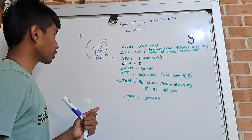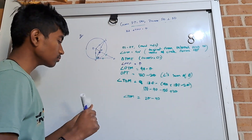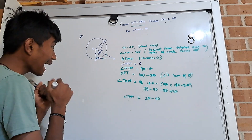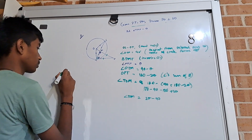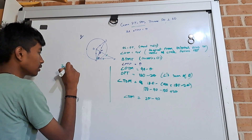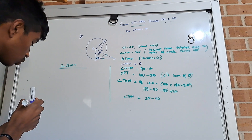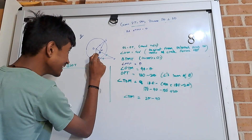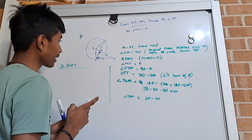Let's take an alternative approach and try the angle sum of triangle SOT. In triangle SOT, we can note that angle OTM is 90 minus theta, so we can use that value here.